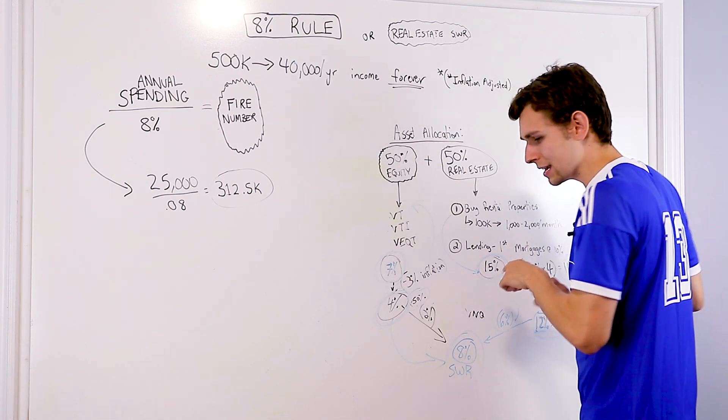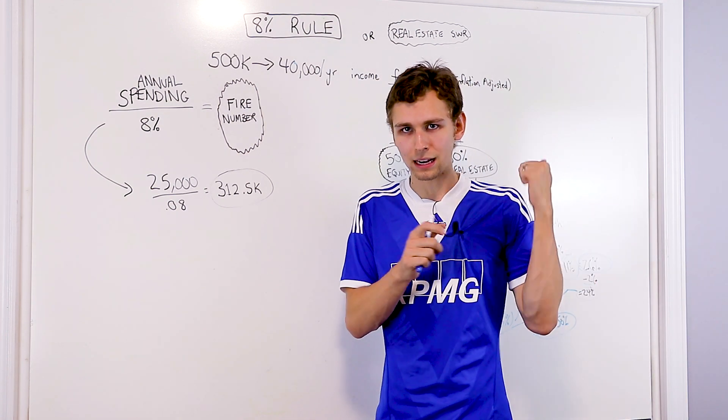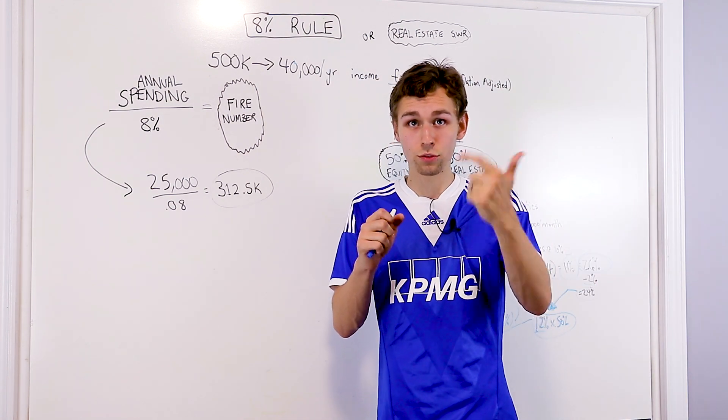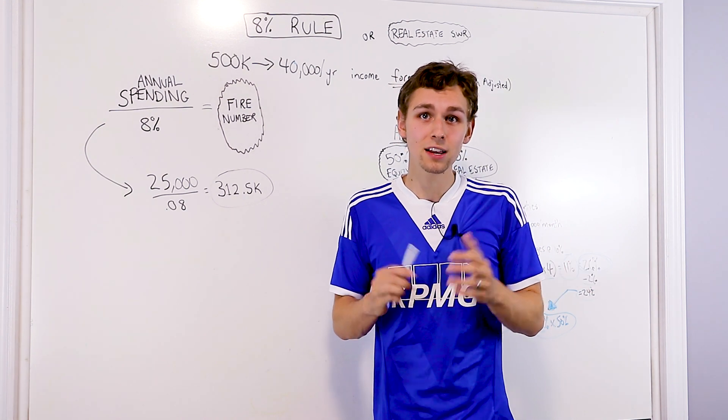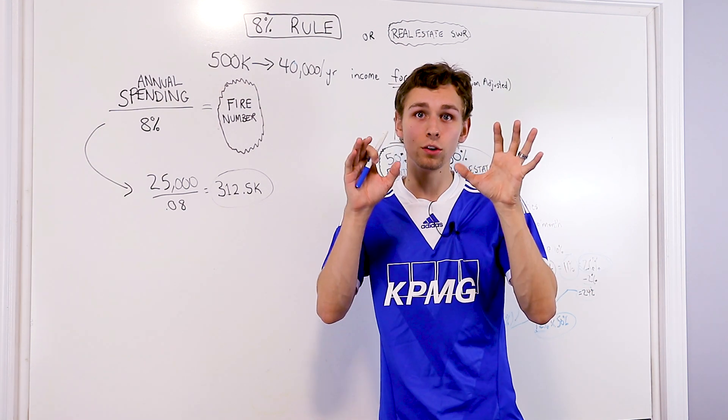In fact, if you didn't factor in that you're going to pay down the properties, imagine if every three years you refinance the equity out, you'd have about a between 12 and 14% safe withdrawal rate, depending on the rental properties that you use in your area.